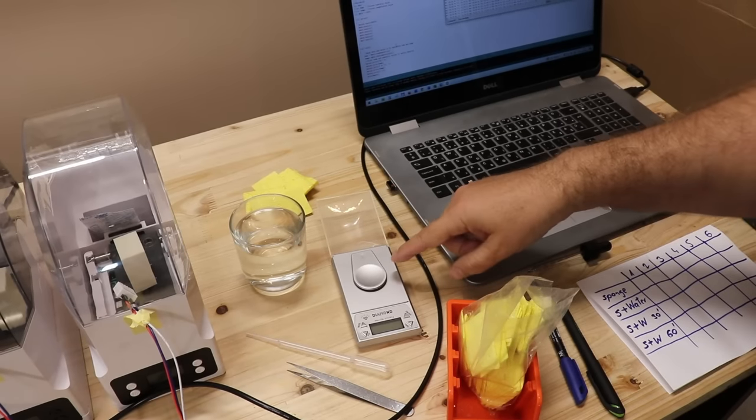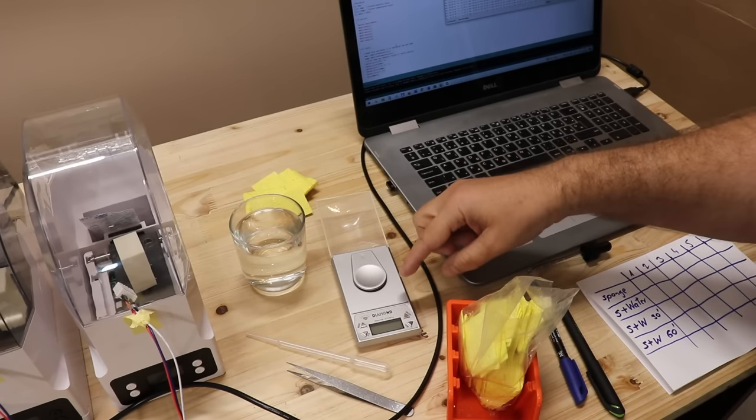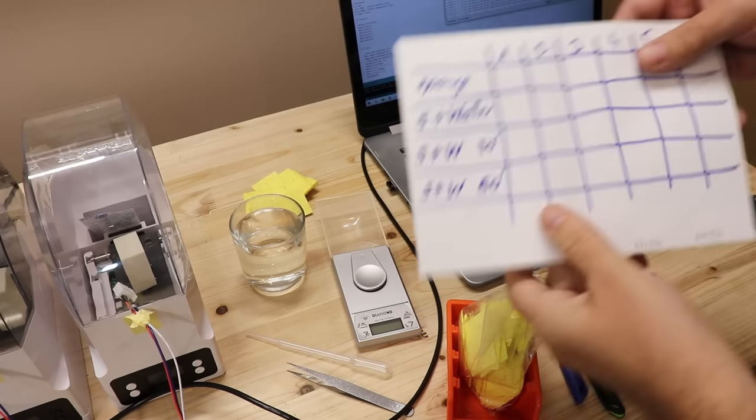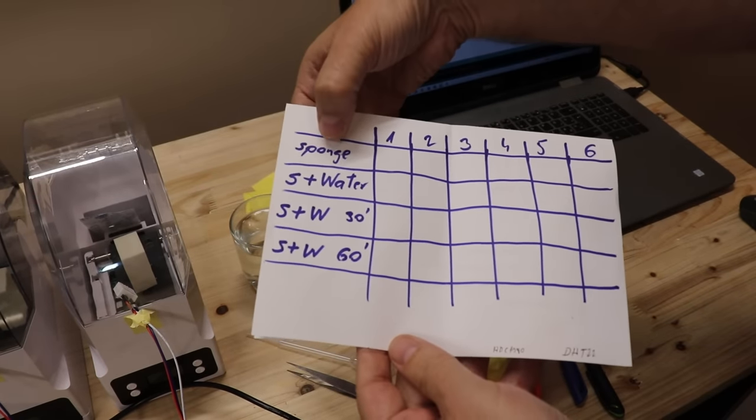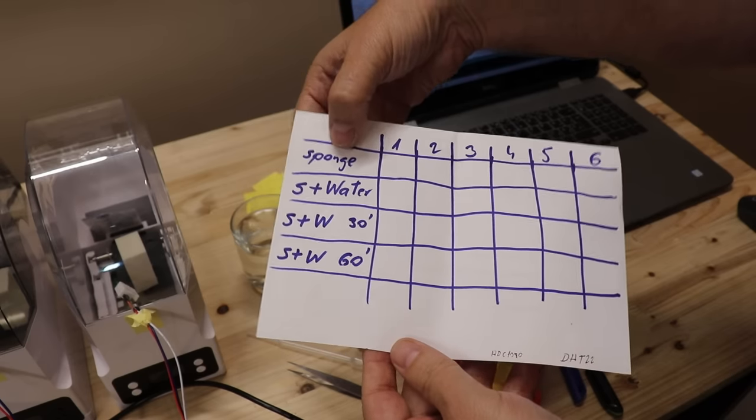I will measure the weight on this jewelry scale and everything will be written here. So I will write first the weight of the empty dry sponge.